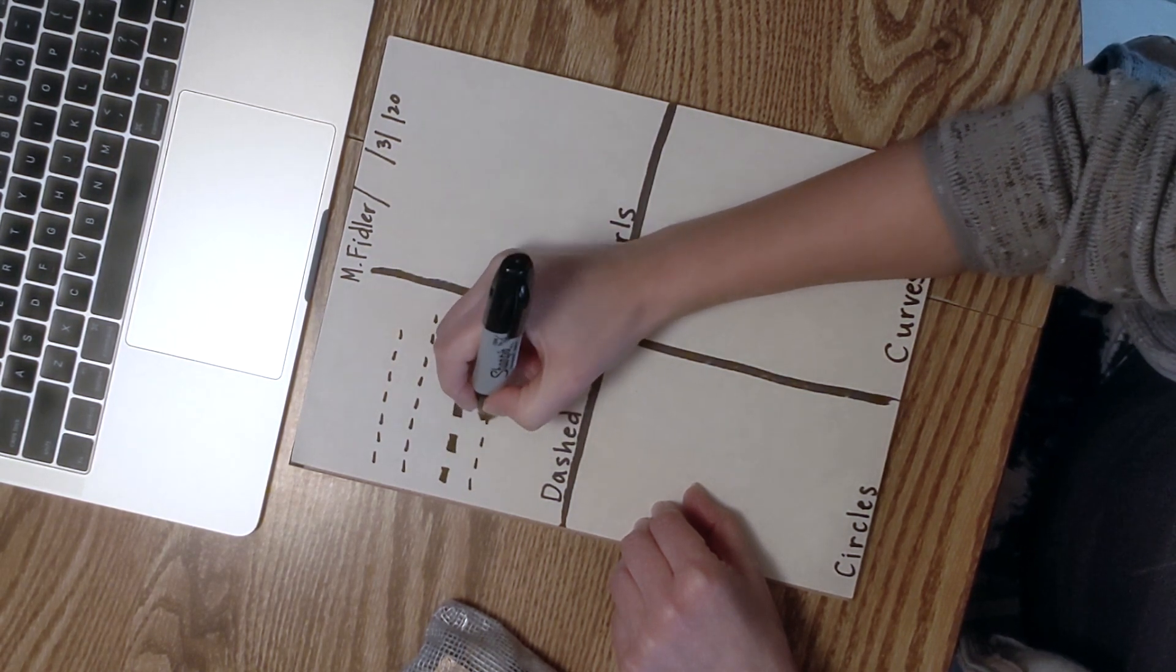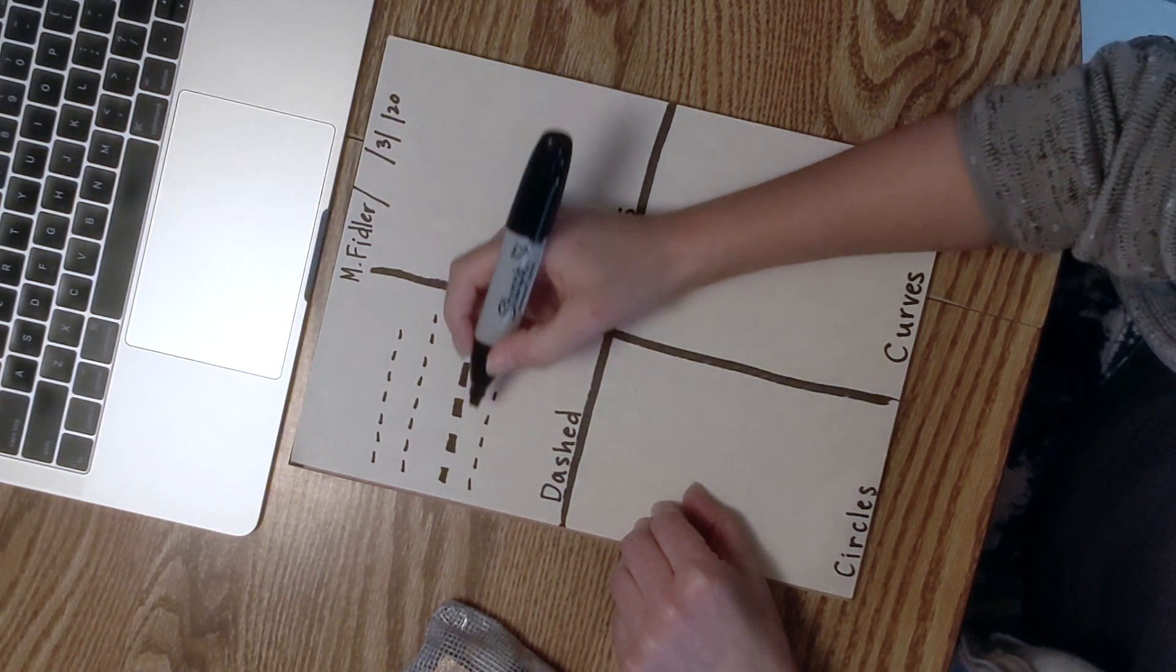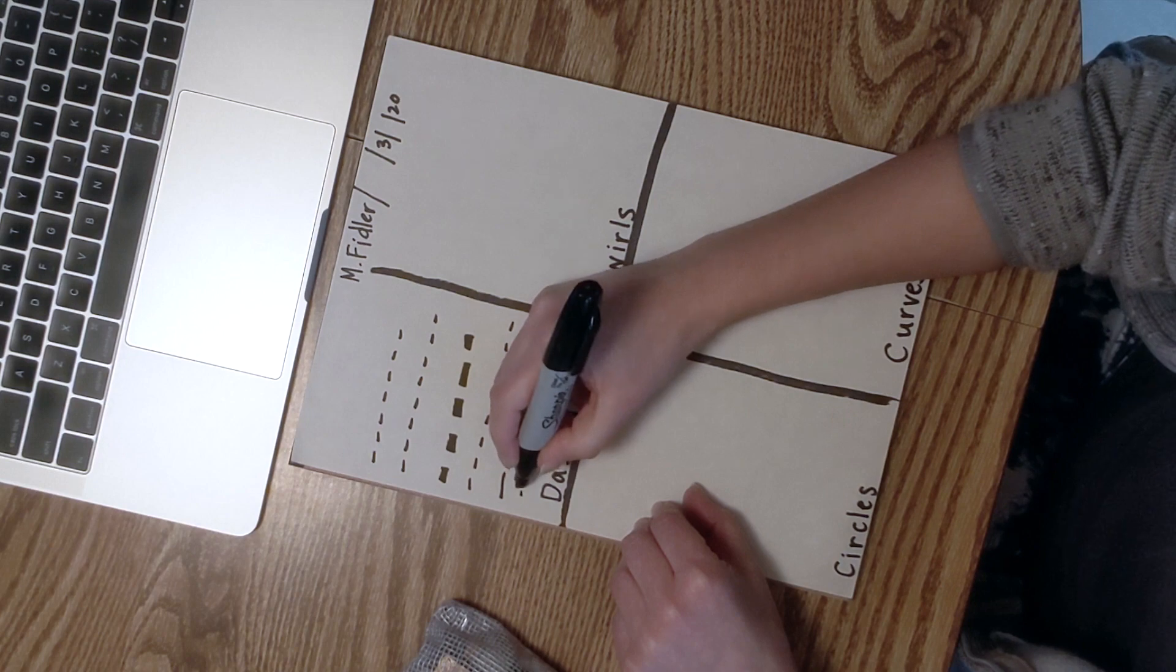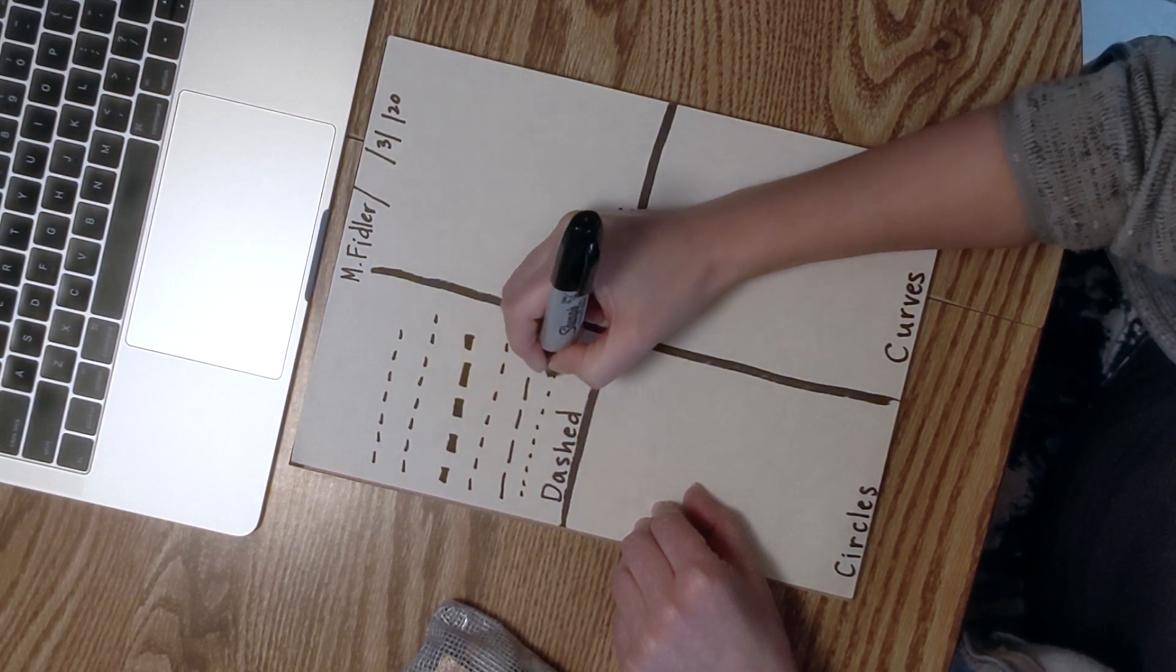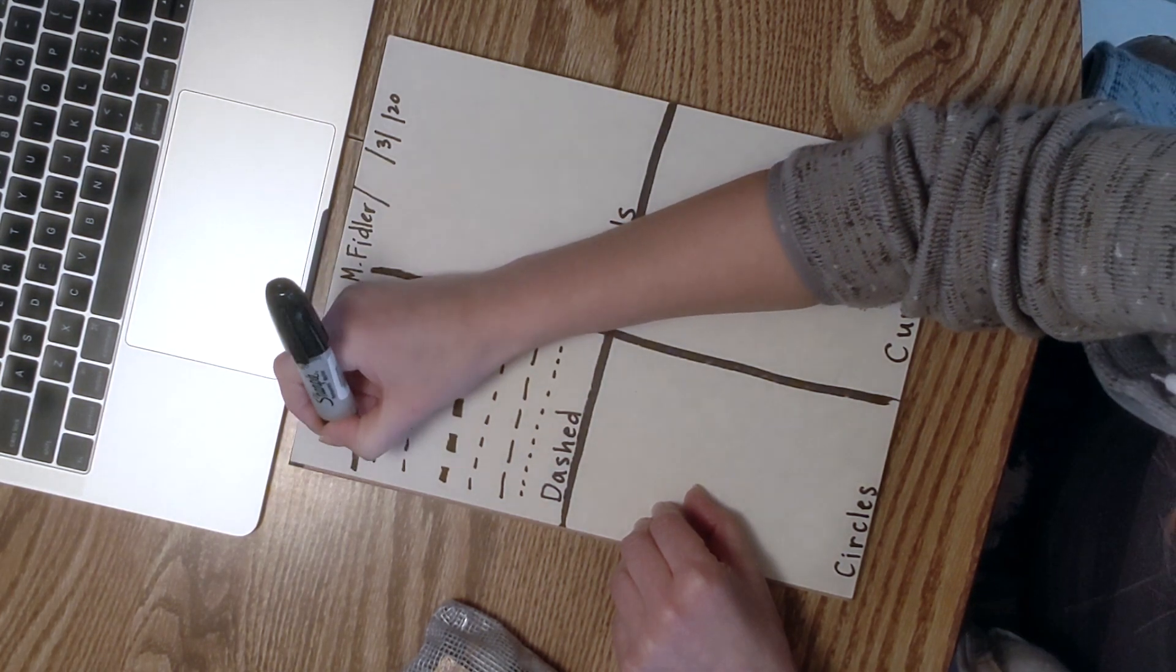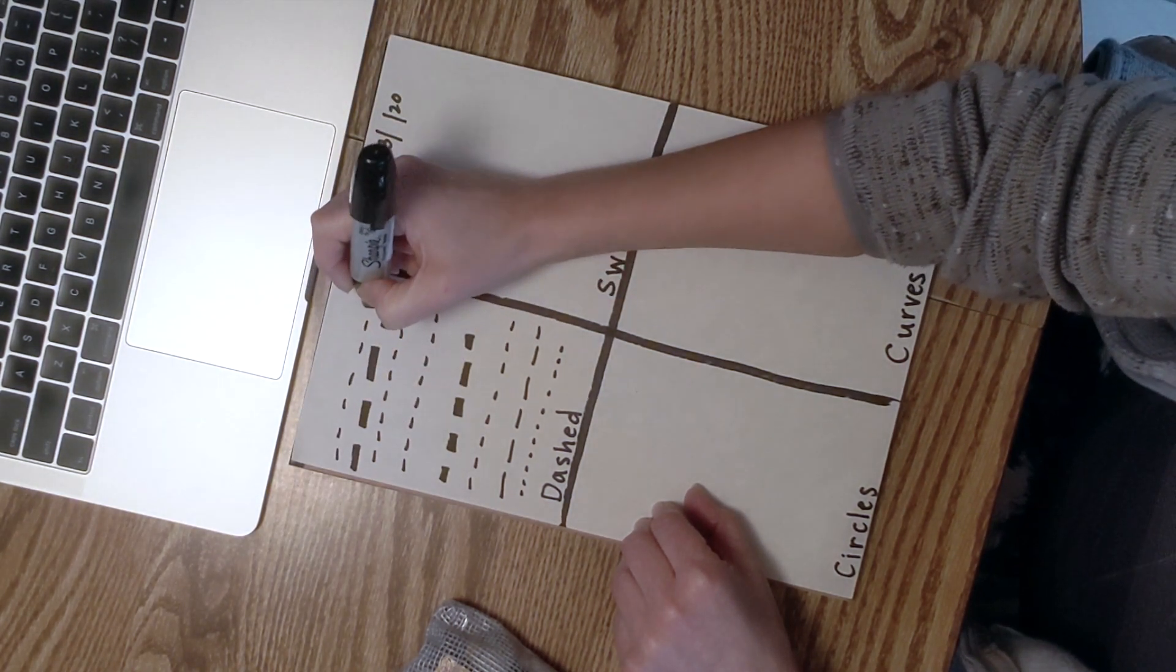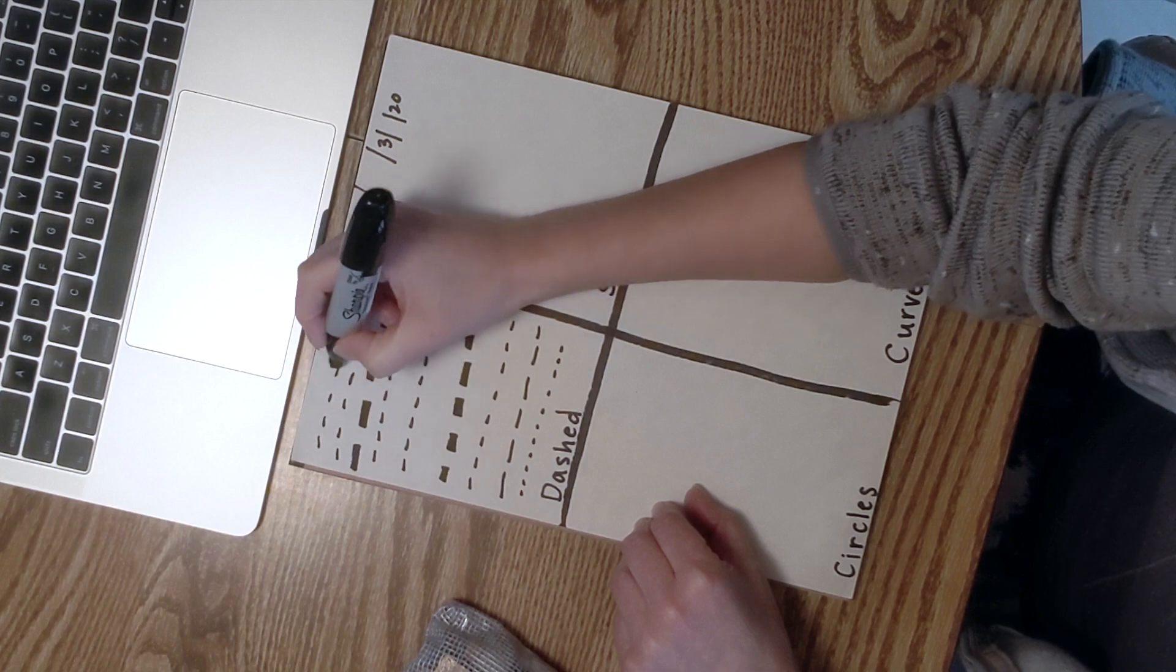Fill the box with all sorts of dash lines. You can do longer dashes, T-dashes, thicker long dashes. Fill up the box.